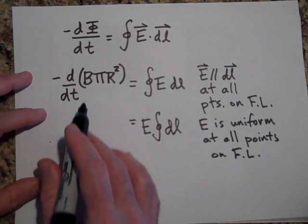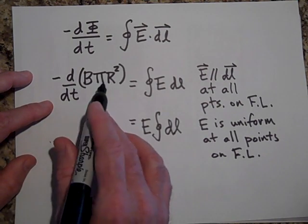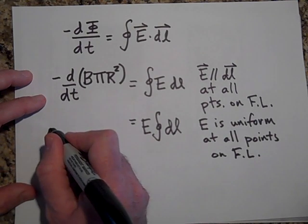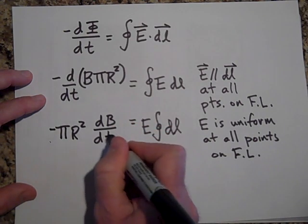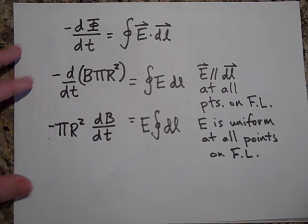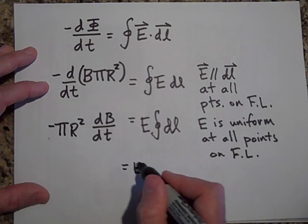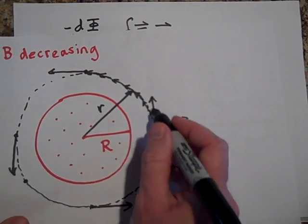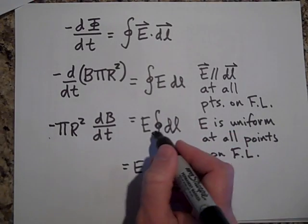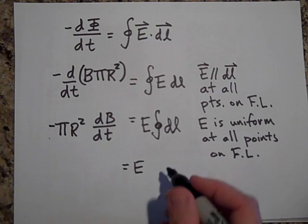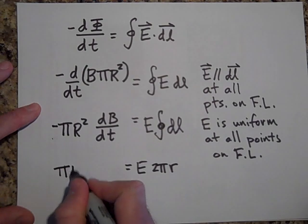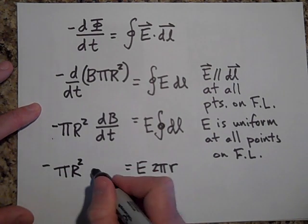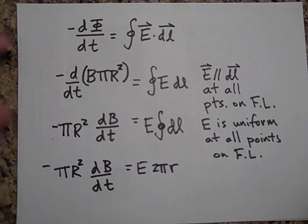So it turns out that the only thing that's changing is B on this side. So I can pull out the pi r squared. It's going to be negative pi capital R squared times the derivative of B with respect to t, equals E times the sum of dl. When I add up all the dl's as I go around the entire loop, that's going to give me two pi little r.